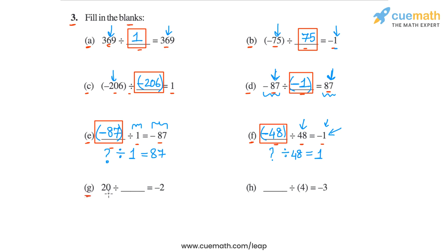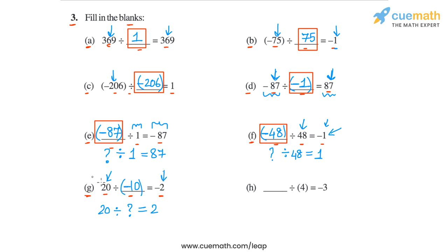Then in part g, we have 20 divided by blank is equal to minus 2. Think about what integer 20 should be divided by — 20 divided by 10 is 2, so first we put 10 here. Then we see that the dividend is positive and the quotient is negative, so the divisor must be negative. So we must have minus 10 here. In part g, the answer is minus 10.